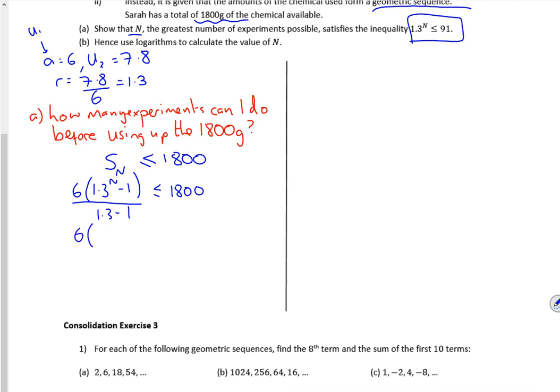Right, so we've got 6, 1.3 to the power n minus 1, over 0.3. So, shall we multiply by 0.3 then? That's when we're less than or equal to 1800. Hang on one second, 1.3 to the power n minus 1 is less than or equal to 1800. Divide through by the 20, it's going to give me a 90. Add one on.